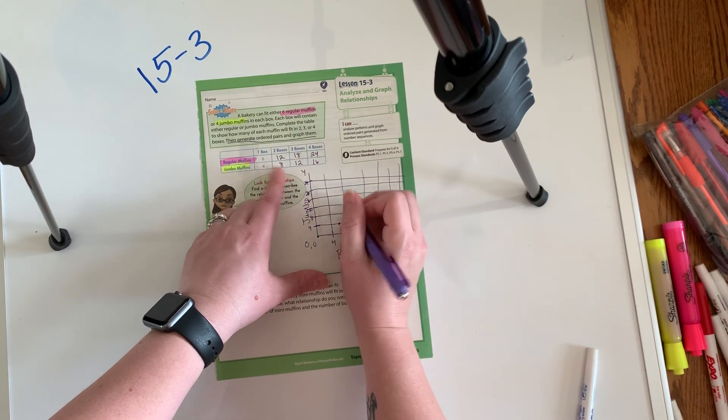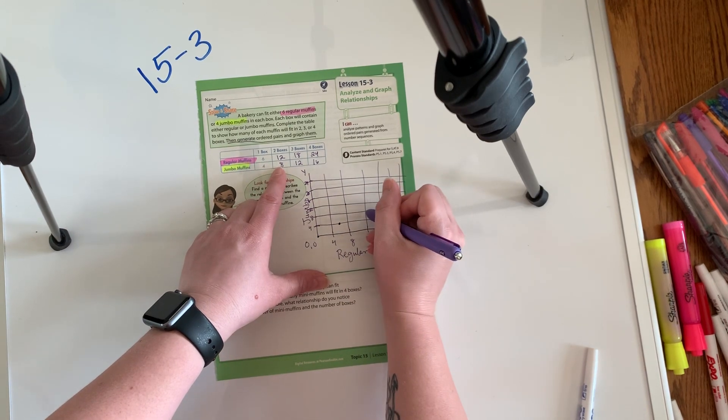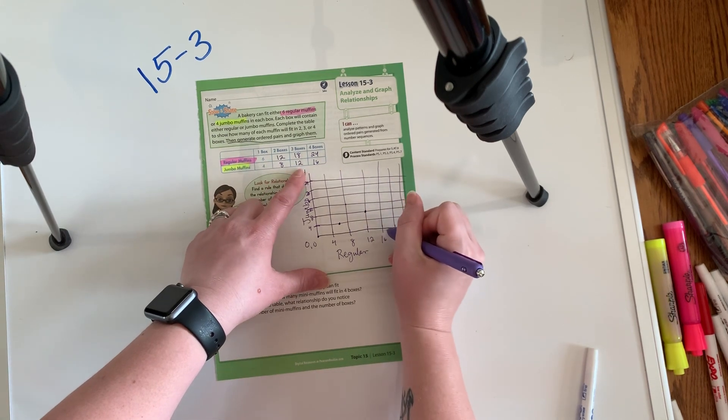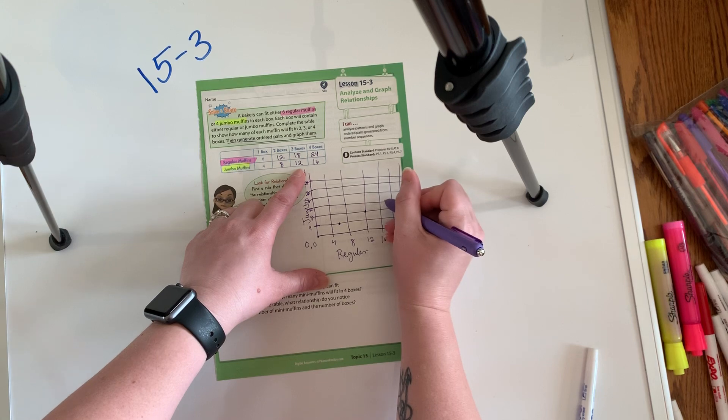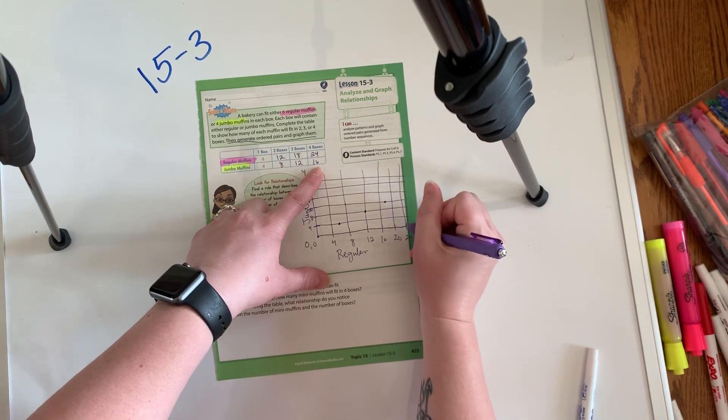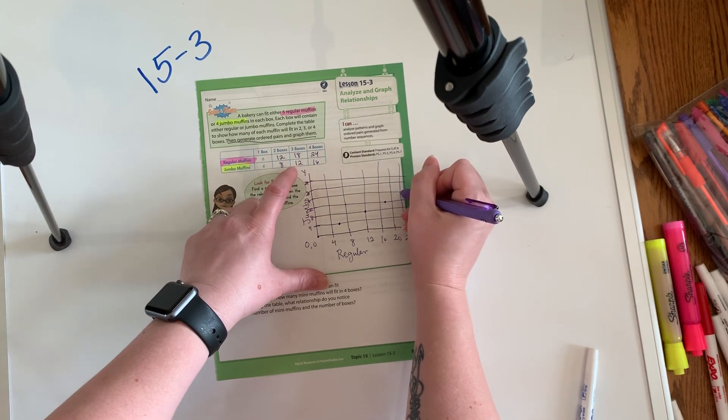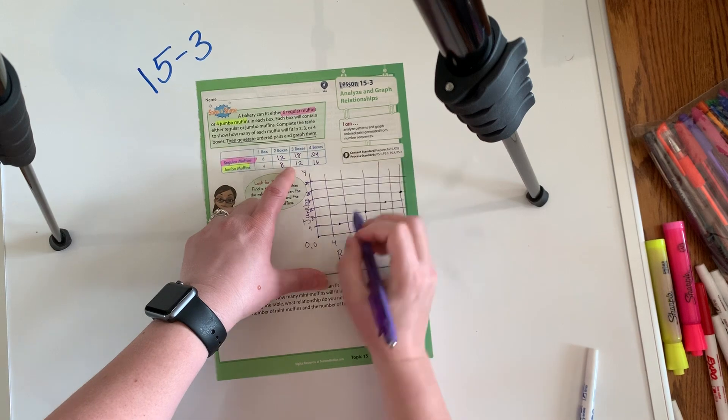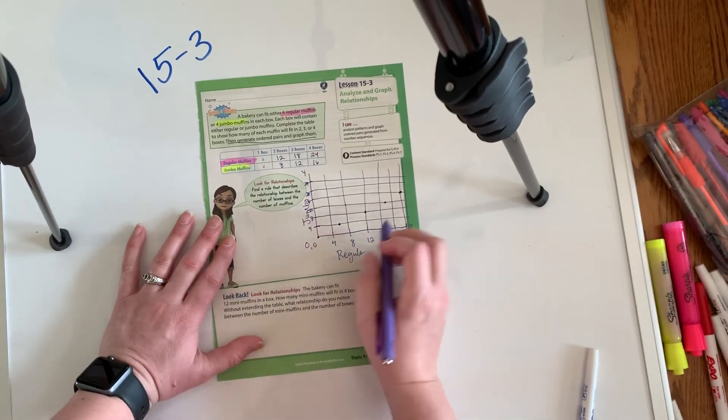I just realized I did this backwards. Okay. So this is six. So this would be 12 and this would be eight. Yeah. Cause this is the regular and then 18 is going to be right between 16 and 20 and 12 is going to be right here. And then 24 and 16 is going to be right here. So you can see how this works.